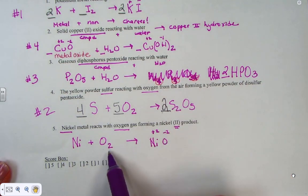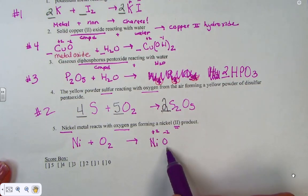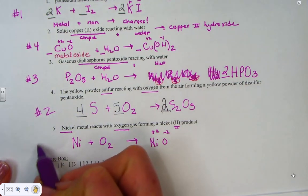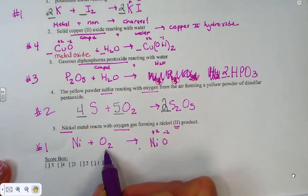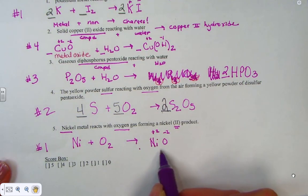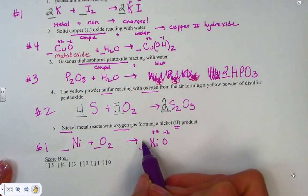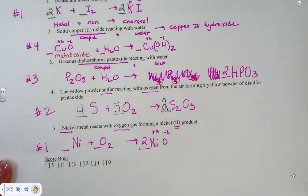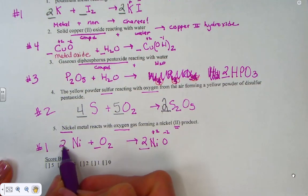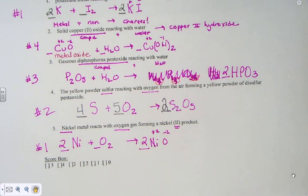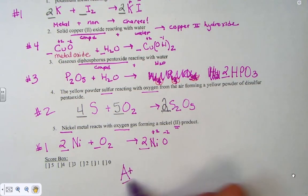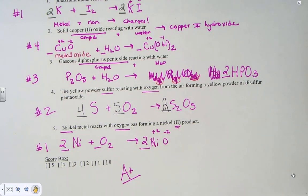When nickel forms a compound, it's going to use a plus-2. When oxide forms a compound, it's going to use a minus-2. Remember, elemental oxygen, O2, but in a compound, NiO. Helpful hint number 1, when a metal hooks to a non-metal, consider charges. Then, we back up and balance. Fixing the oxygens and repairing the nickels. A 2 to 1 to 2 ratio. This ends the helpful hint journey on combinations, preparing us for the 5 we'll see on test day.